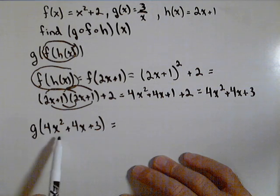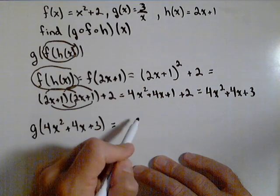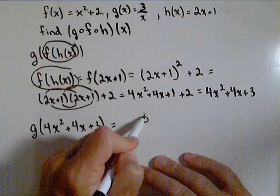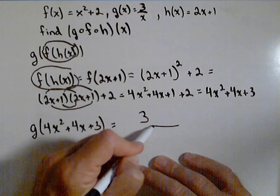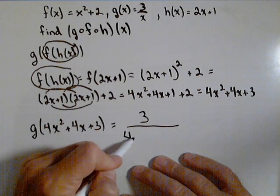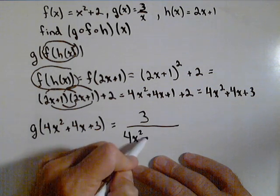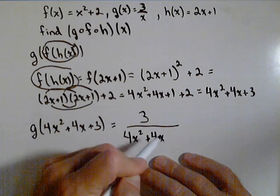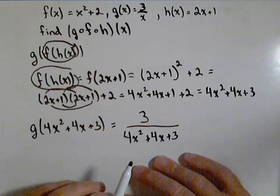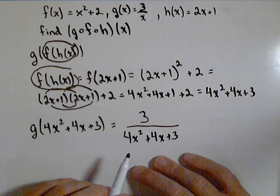So now any place there's an x, we're putting this in as the input. So g has its input in the denominator. So we'll have three over four x squared plus four x plus three. And there's not really much more simplifying we're gonna be able to do past that.